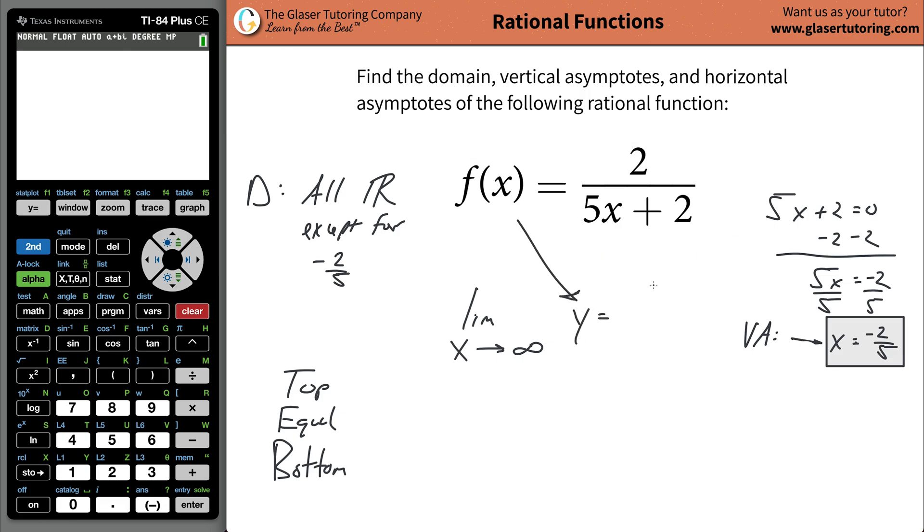So in other words, the function's value y will approach, or f(x), right? f(x) and y are basically tomato to motto. It will approach zero. And this is now known as your horizontal asymptote. So that's how you go about that.